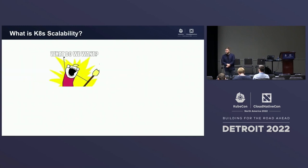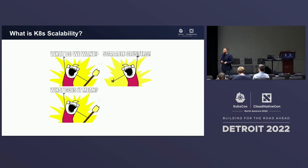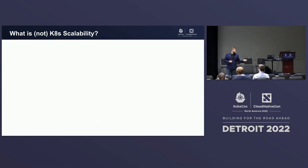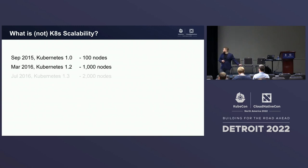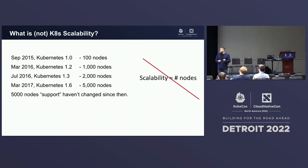So, what is Kubernetes scalability? Sometimes we ask our users what they want, and basically they say they want scalable clusters. But if we ask them what that means, they usually don't really know — because scalability is not just a single number. In 2015, Kubernetes 1.0 supported 100 nodes. This number changed over a few releases to 1,000, 2,000, then 5,000 nodes — supported in 2017 in Kubernetes 1.6. That number has not changed since 2017. The scalability of Kubernetes is not just the number of nodes; it's much more than that.